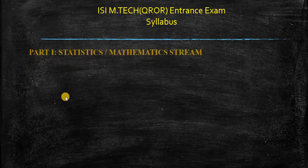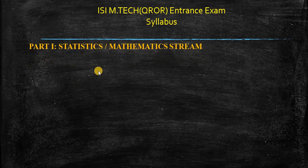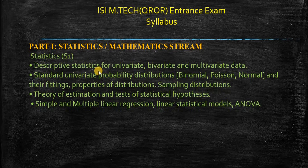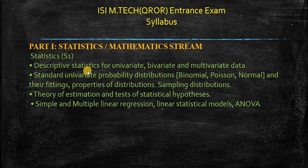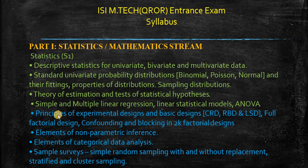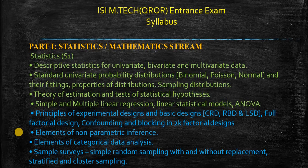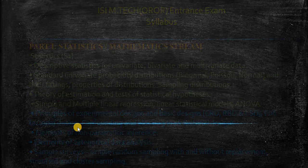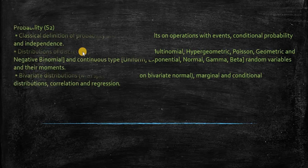Now, in MTQR entrance exam syllabus, the first part is mathematics and statistics. This is optional. Statistics S1 includes descriptive statistics. In the standard univariate, they have all types of distribution: normal, Poisson, and binomial. Sampling distributions will be there. All these formulas and the syllabus is given in my description. Remember that all these things will come in the MCQ portion as well as in the subjective segments. You need to really get a grip if you are a master student from the statistics background.